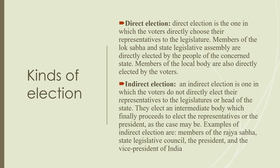Indirect election is a process by which voters do not directly elect their representatives. They elect an intermediate body which finally proceeds to elect the representatives, or the President, as the case may be. Examples of indirect election are: members of the Rajya Sabha, who are elected by the MLAs of the state assembly; the state legislative council, which exists in some states apart from the legislative assembly; and the President and Vice President of India.